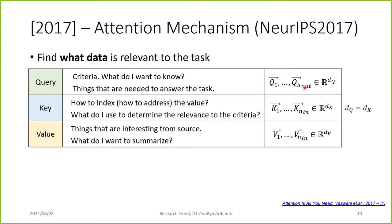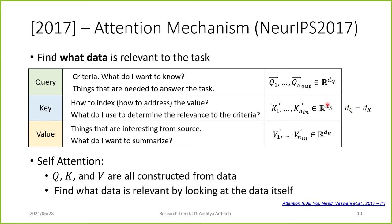The query consists of n_out query vectors of dimension d_q; the key is n_in vectors of dimension d_k; and the value is n_in vectors of dimension d_v. Here d_q equals d_k. It is called self-attention because the query, key, and values are all constructed from the data itself — it finds what data is relevant by looking at the data itself.